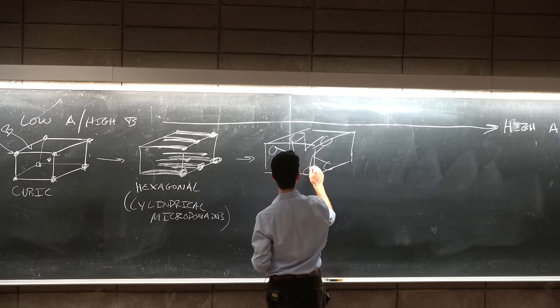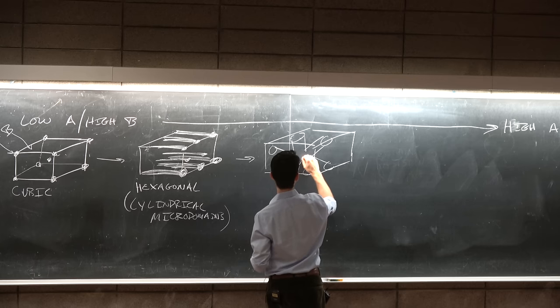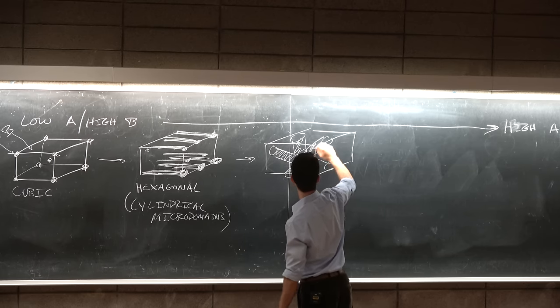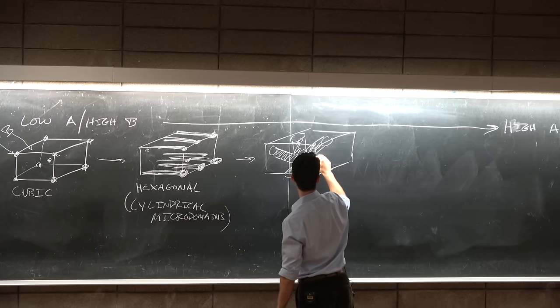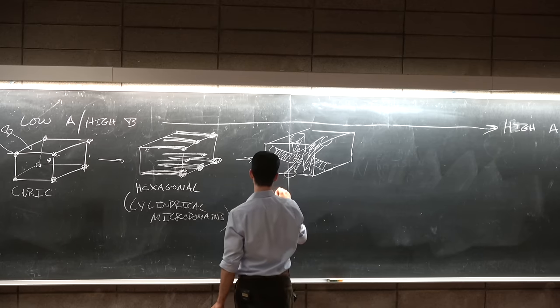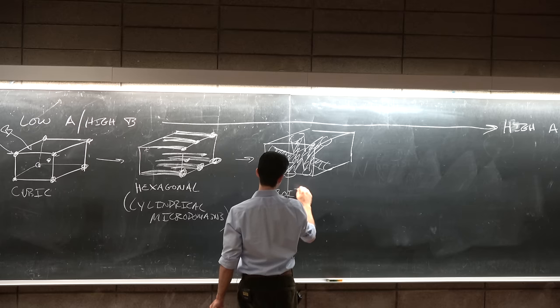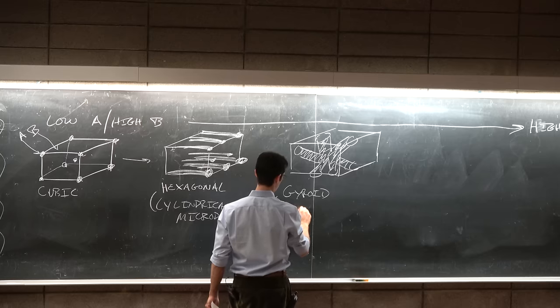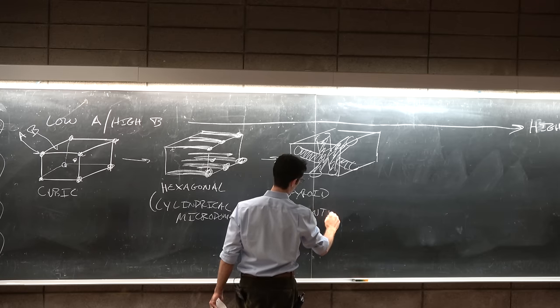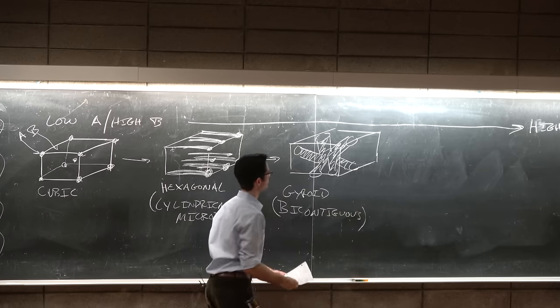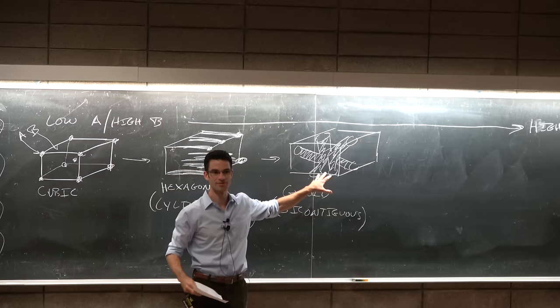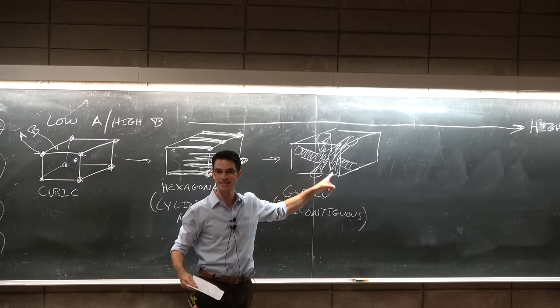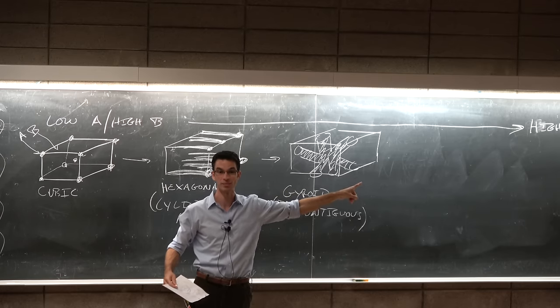So these are called microdomains, even though the typical dimensions are like 10 to a few hundred nanometers. As you increase the fraction of A even more, you get this structure that doesn't persist for very many weight fractions. And it's the most impossible one to draw. But for homework, I would encourage you to do a Google image search for this. I'm just going to fake it here, is the gyroid structure.